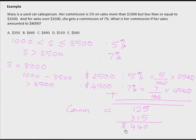The answer is B. I broke up her sales into three parts: the first $1,000 gets no commission, the next $2,500 gets a commission of 5%, and the last $4,500 gets a commission of 7%.